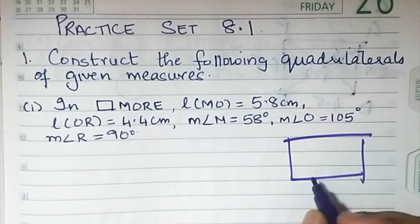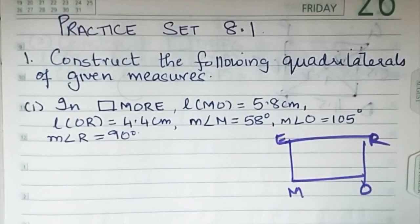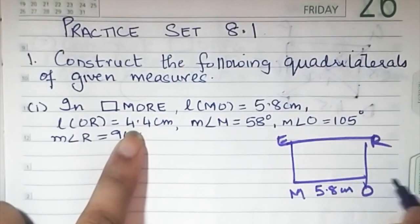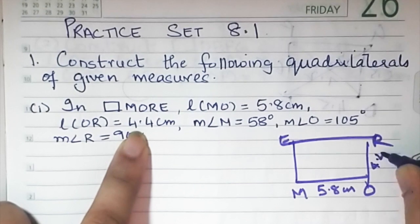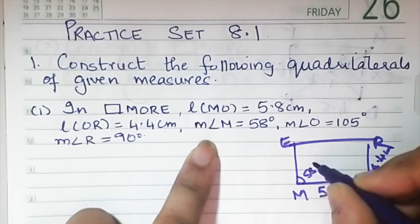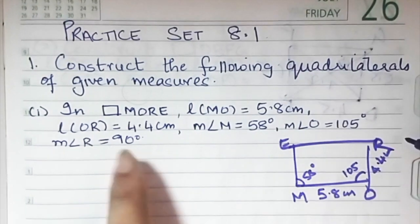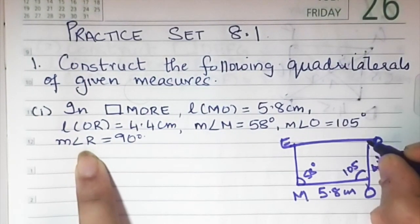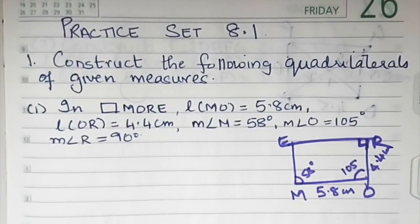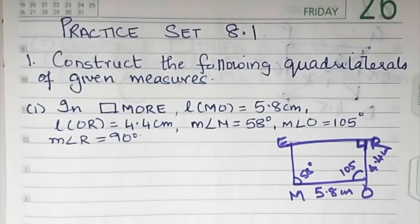So in quadrilateral MORE: MO is 5.8 centimeters, OR is 4.4, angle M is 58°, angle O is 105°, and angle R is 90°. Once the rough figure is done, it's easy to draw. Remember, the rough figure is compulsory — you have to draw the rough figure.